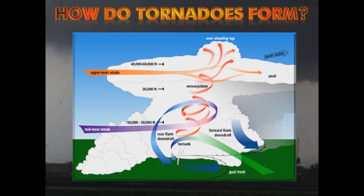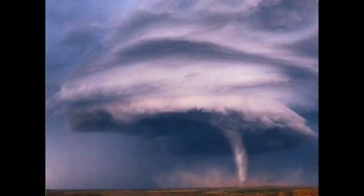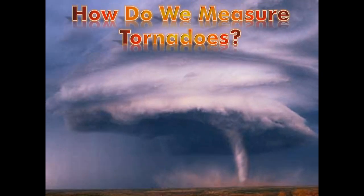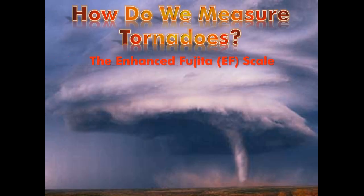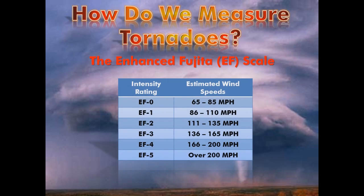So how do we measure tornadoes? We measure tornado strength using the Enhanced Fujita Scale. This replaced the original Fujita Scale in 2007 to account for building methods used on structures, among other things, and also takes into account the damage done along the tornado's path and not just its estimated wind speed. The EF scale contains six intensity ratings, from EF0 to EF5.